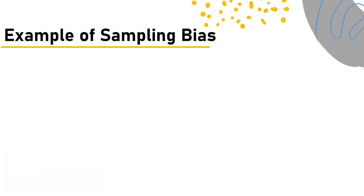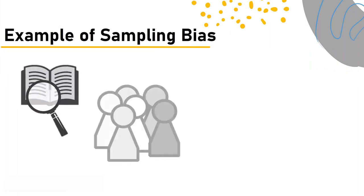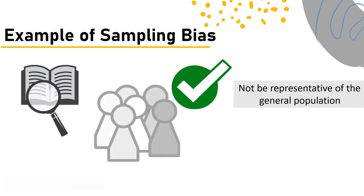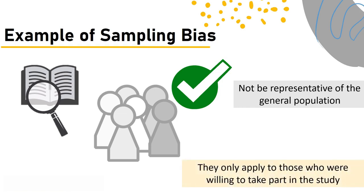Example of sampling bias: If a study only includes people who are willing to participate, it may not be representative of the general population. This could lead researchers to believe that the findings are applicable to everyone, when in reality they only apply to those who were willing to take part in the study.